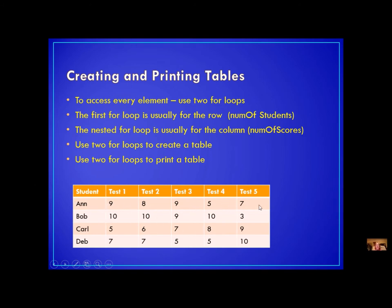This is typically the way that we do it, but you can reverse the two loops — meaning you start with the first column, go down the rows, then increment and go down the rows again. So you can do it either way; this is just the typical way.